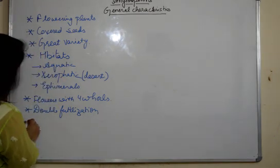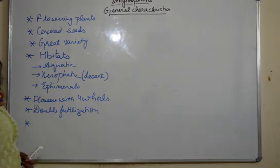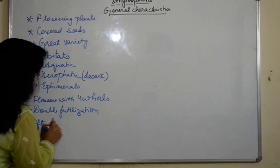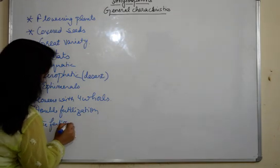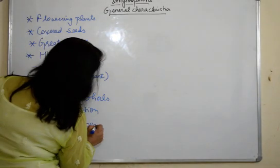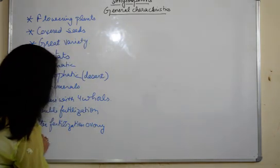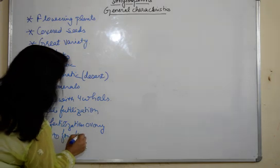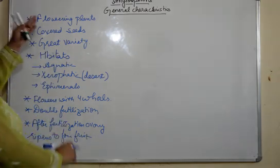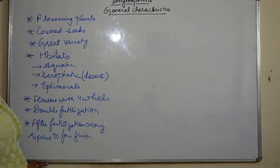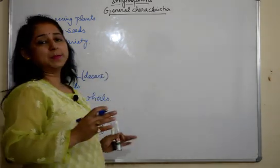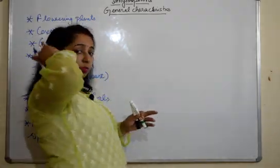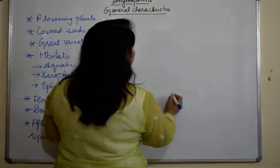After fertilization, the ovary ripens to form fruit. These are some general characteristics of angiosperms. I'll quickly explain what four whorls are. It's something related to angiosperms you must know. It's there in your book as well.